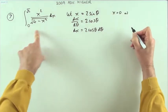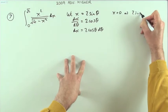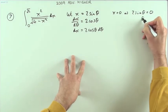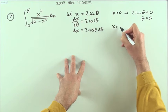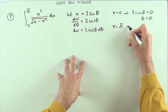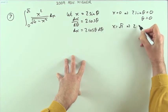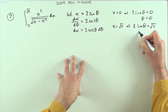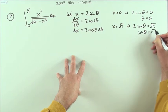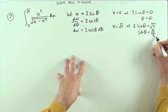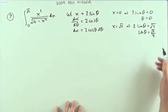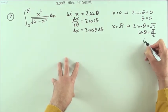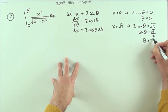Now what about the limits? If x equals zero, then two sin θ equals zero, so θ will just be zero. If x equals root two, then two sin θ equals root two, so sin θ equals root two over two, which is the same as one over root two — that's 45 degrees, that's π/4.